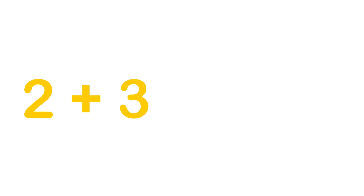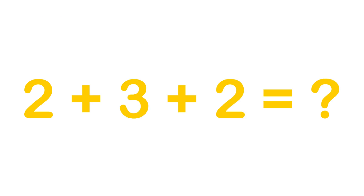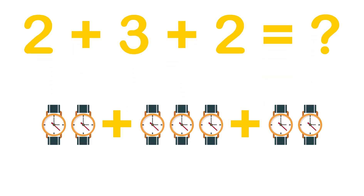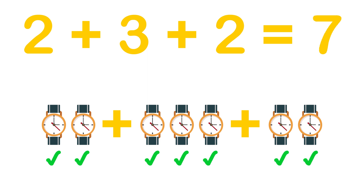2 plus 3 plus 2 equals to what? 1, 2, 3, 4, 5, 6, 7. 2 plus 3 plus 2 equals to 7.